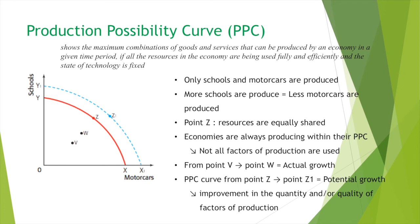Looking at an example of schools and motor cars — where only schools and motor cars are produced — the quantity of schools is on the y-axis and motor cars are on the x-axis. As you can see, when more schools are produced, fewer motor cars are produced, and vice versa — when more motor cars are produced, fewer schools are produced.